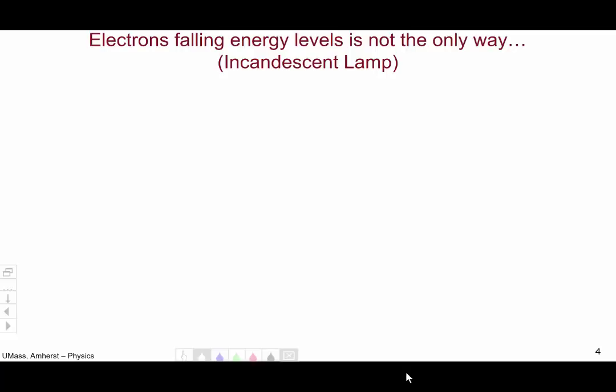Electrons changing energy levels, however, is not the only way to produce light. Think about one of those old-school incandescent lamps with the filament in it that get hot as you turn them on. To understand why these incandescent lamps give off light, we have to understand a little bit about what is temperature.